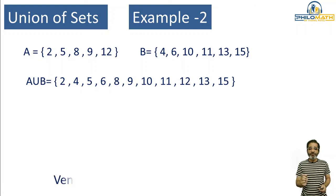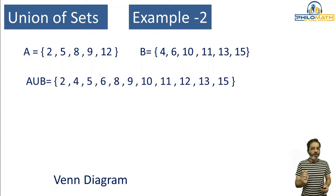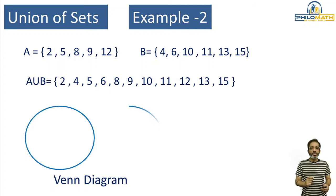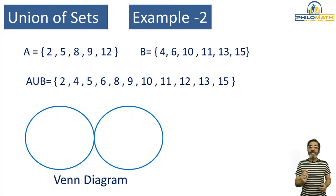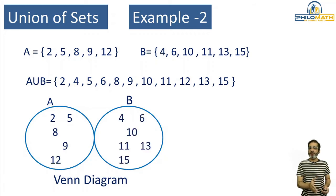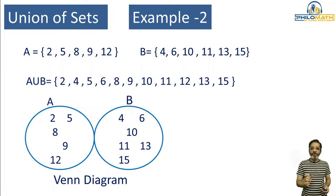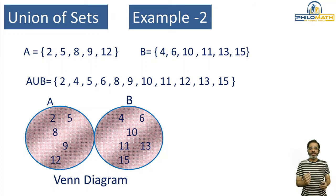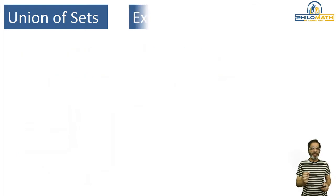There is a small difference when we draw the Venn diagram for this. Since there are no common elements from A and B, I'm going to draw two circles which are touching each other — not intersecting as we did in example one, but touching. I give the names A and B. Since there are no common elements, I write down all elements from Set A and all elements from Set B. Since we are doing union, I shade everything. This is the final Venn diagram for A union B.